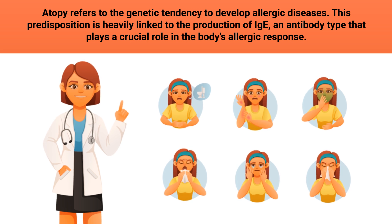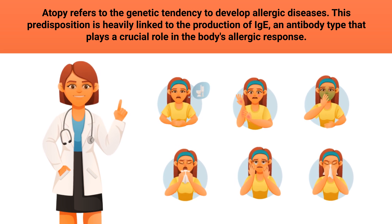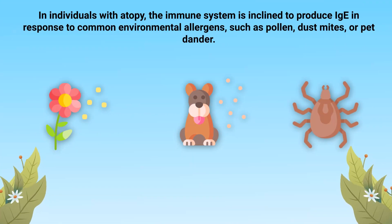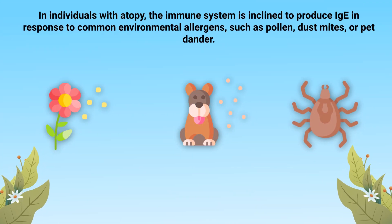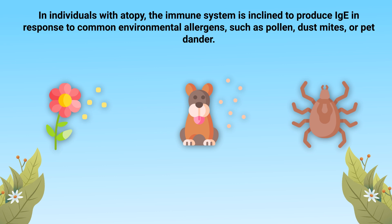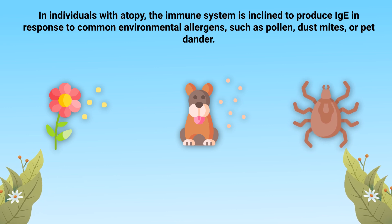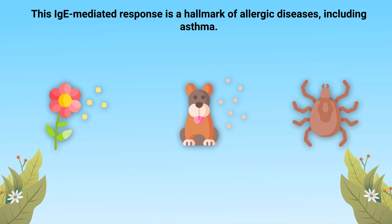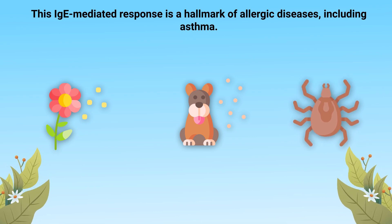This predisposition is heavily linked to the production of IgE, an antibody type that plays a crucial role in the body's allergic response. In individuals with atopy, the immune system is inclined to produce IgE in response to common environmental allergens such as pollen, dust mites, or pet dander. This IgE-mediated response is a hallmark of allergic diseases, including asthma.